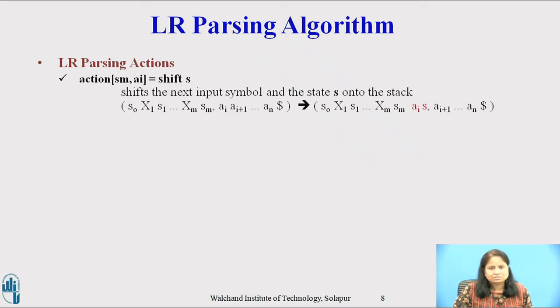LR parsing action: If the action SM comma AI equals shift S, the parser executes a shift move. The parser shifts both the current input symbol AI and the state S onto the stack. The configuration changes from S0, X1, S1 up to XM, SM with input AI, AI plus 1 up to AN dollar, to S0, X1, S1 up to XM, SM, AI, S with input AI plus 1 up to AN dollar.